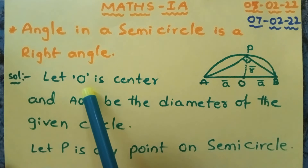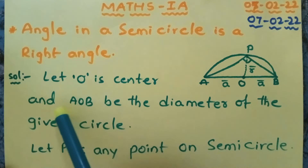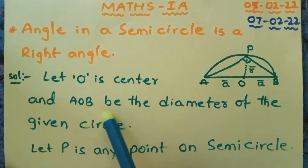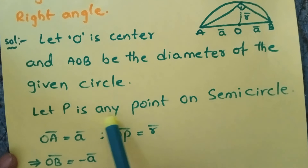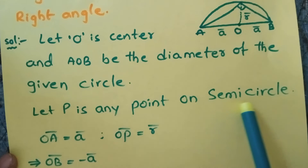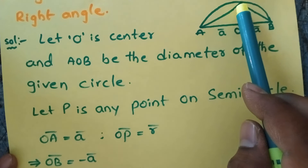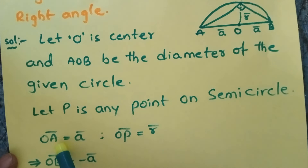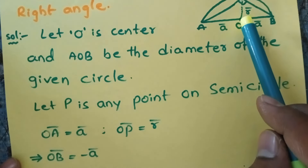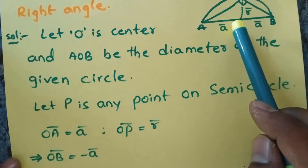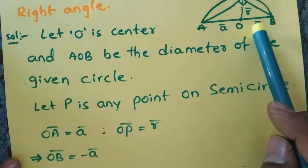We are taking OE as the center in the semi-circle and AOB is the diameter of the semi-circle. Let P be any point on the semi-circle. Now, OA is equal to A bar, OP is equal to R bar, OB is equal to minus A bar. Why? Because OB is in the opposite direction of OA, that is why we are taking minus A bar.